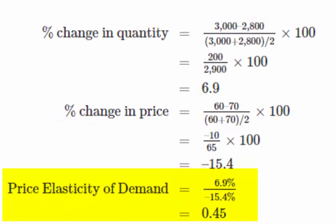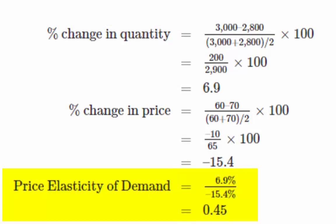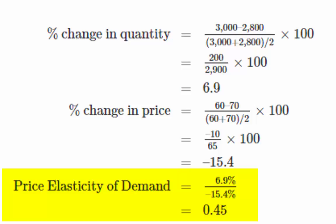Finally, we calculate the price elasticity of demand coefficient. Coefficient is a word used to denote a number that helps us measure a property. In this case, the property we are trying to measure is elasticity. We divide our percentage change in quantity by our percentage change in price, and that gives us a price elasticity of demand coefficient of negative 0.45. Note that for price elasticity, we take the absolute value of the coefficient and drop the negative sign, so our price elasticity of demand coefficient becomes 0.45.